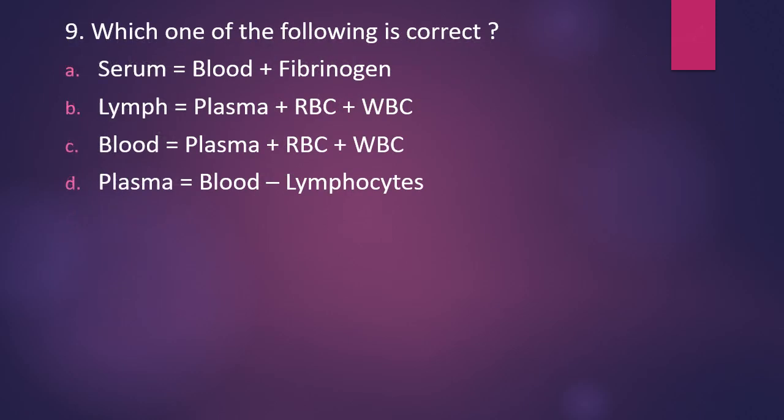Question number nine: which one of the following is correct? Serum equals blood plus fibrinogen; lymph equals plasma plus RBC plus WBC; blood equals plasma plus RBC plus WBC; or plasma equals blood minus lymphocytes. The correct answer is option C — blood is equivalent to plasma plus RBC plus WBC.